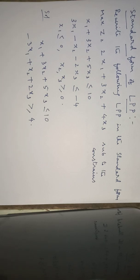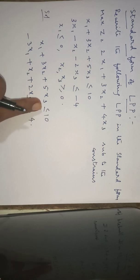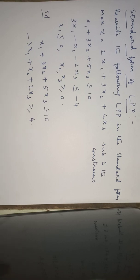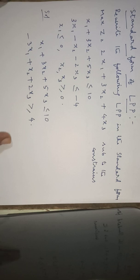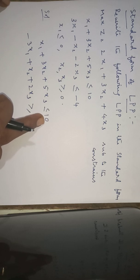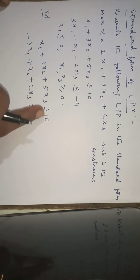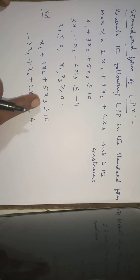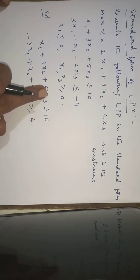Now we have to convert the constraints into equalities by adding a suitable slack variable or surplus variable. We add a slack variable when the constraint has a less than or equal to symbol, in order to make it into equation form — by adding a new variable called the slack variable on the left-hand side of the constraint.